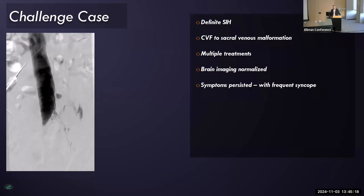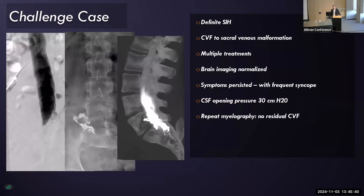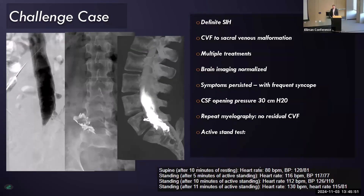There was a very frequent syncopal component — this patient was passing out multiple times per week and feeling presyncopal very often. CSF pressure had gone up to 30 centimeters of water. As best we could tell, there was no persistent ongoing leak and the brain imaging had normalized, but the patient was still symptomatic. I did an active stand test and her heart rate increased by 50 beats per minute, meeting criteria for POTS. In my experience, very frequent syncope should be a red flag for co-existent dysautonomia.